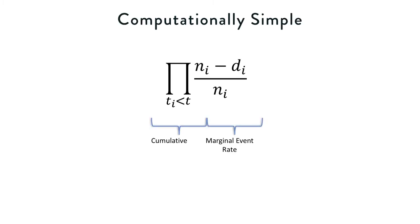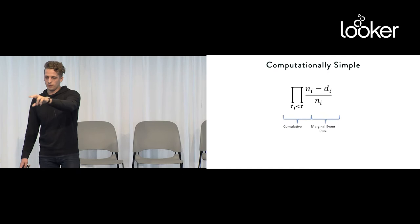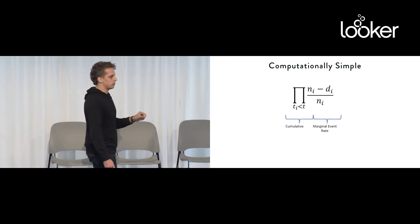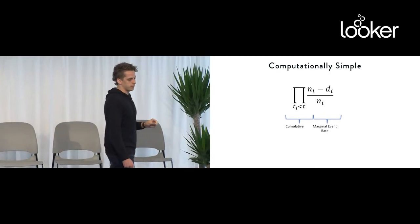And it's computationally simple. Pulled this off of Wikipedia, it might impress your boss, but it's actually really straightforward. What's going on here is we're just trying to figure out the number of people who died among those who could have died, and then we're taking the cumulative probability over all the time periods.